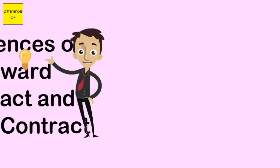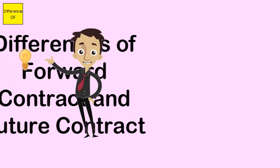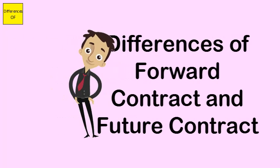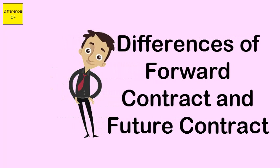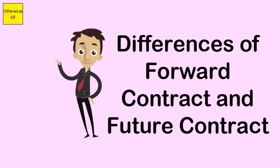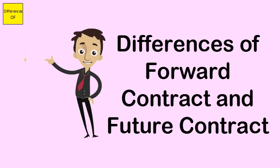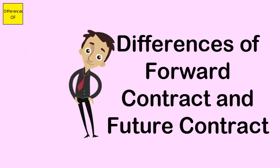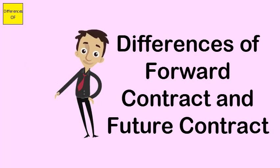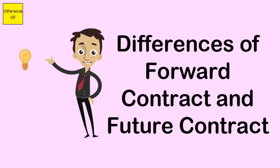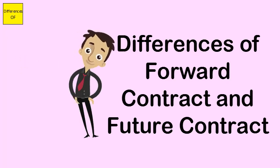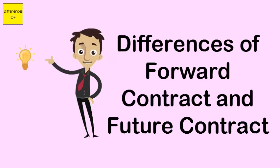Difference between forward contract and future contract. A forward contract is an agreement between two parties to buy or sell an asset at a pre-agreed date in the future at a specified price. A future contract is a standardized contract that is traded on a futures exchange to buy or sell an underlying instrument at a certain date in the future at a specified price.